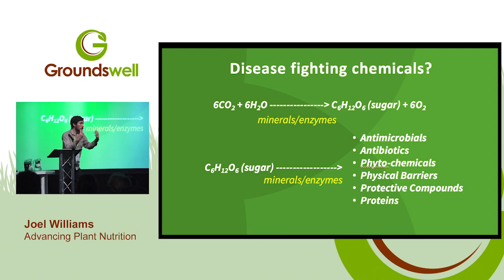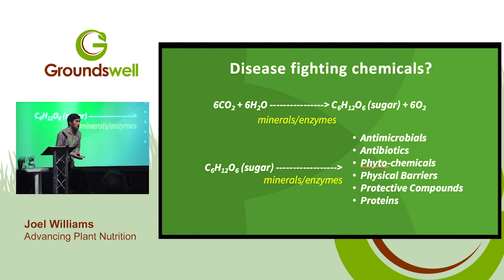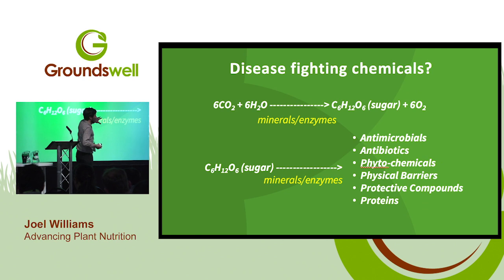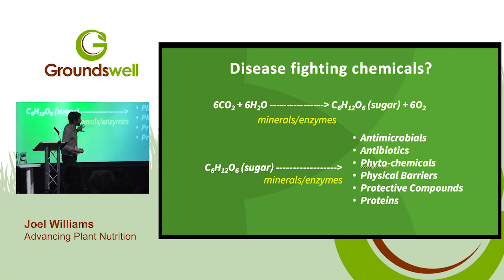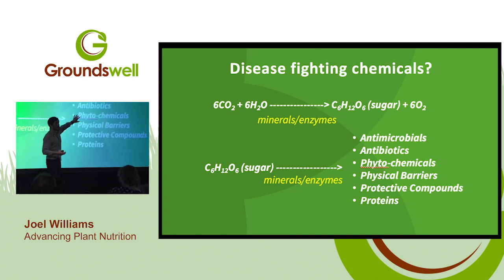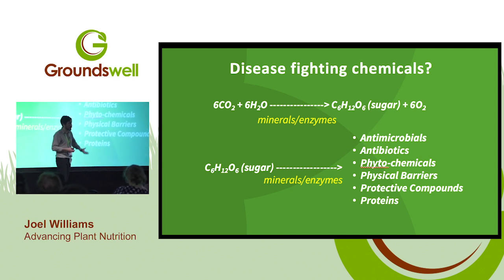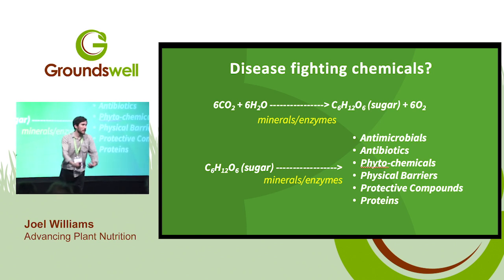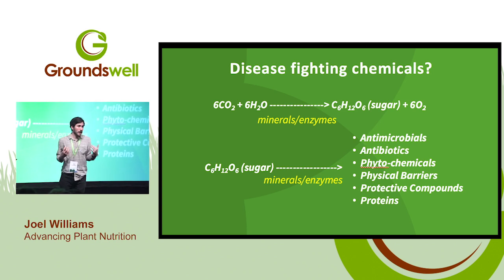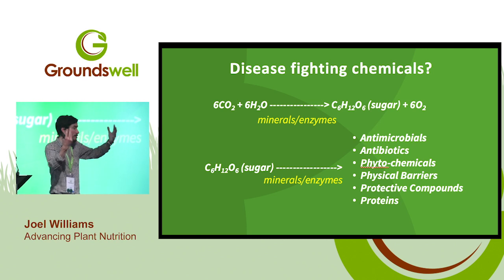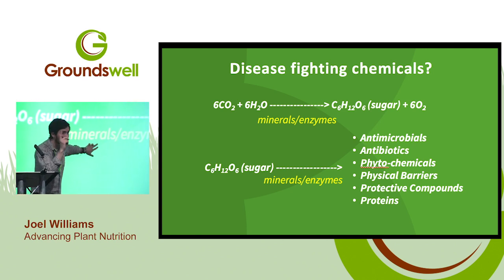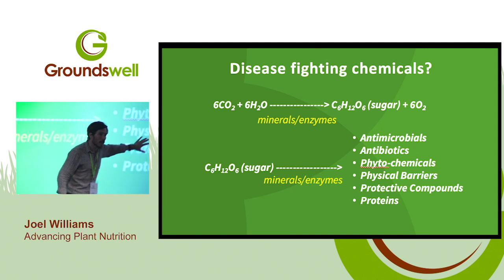What about plant immunity? How does the plant fight off diseases? It's the exact same slide — we need minerals and catalysts to drive this process, but the plant can also synthesise all of these other interesting secondary compounds: antimicrobials, antibiotics, these phytochemicals, physical barriers, protective compounds, proteins. All of these things help the plant be less attractive and less susceptible to insect attack. The plant has an immune system and it can fight off disease, but it requires the adequate delivery and supply of the mineral catalysts in order to drive its immune system.